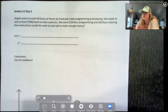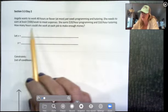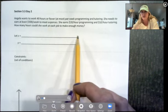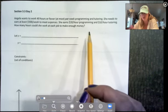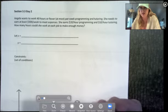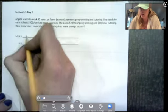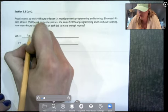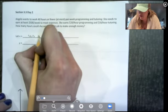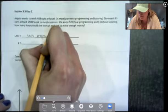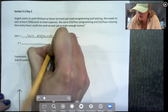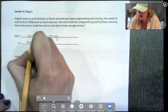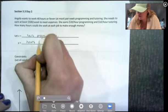So again, we want to identify what our variables are going to represent. How many hours could she work at each job? So I need a variable for her tutoring job and a variable for her programming. So I'm going to let x be her programming, hours programming, and then y, I'm going to say hours tutoring.